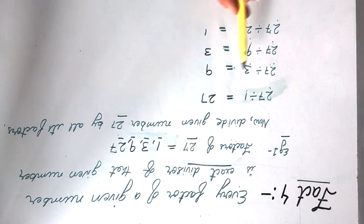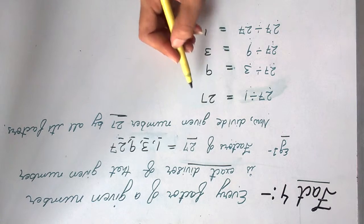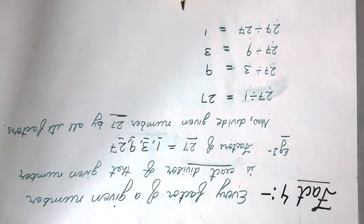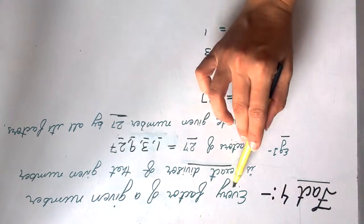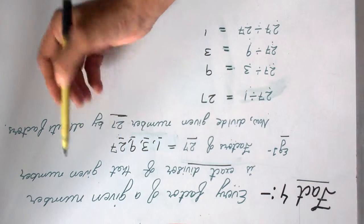27 divided by 27 equals 1. So here we can say that all the factors divide 27 exactly without leaving any remainder. So here we proved that every factor of a given number is exact divisor of that given number.